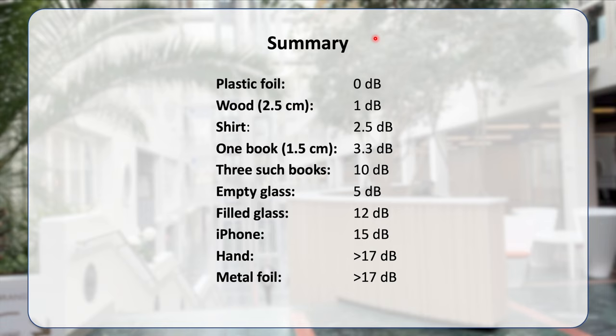Here is a summary of the measured penetration losses: plastic foil, almost 0 dB; wood, 1 dB; a shirt, 2.5 dB; one book, 3.3 dB; three such books, 10 dB; an empty glass, 5 dB; a filled glass with water, 12 dB; an iPhone, 15 dB; and for the hand and metal foil, the penetration loss was above 17 dB, bringing the signal all the way down to the noise floor.